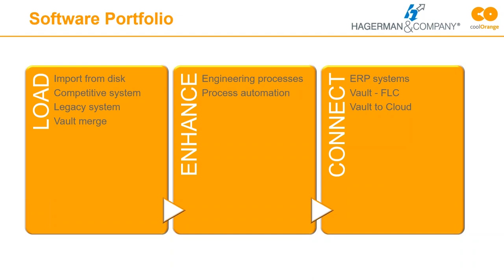There's no real easy way to merge Vaults while keeping all the history of files in both systems. Autodesk provides a tool to enable that, but it's only available to resellers and is not easy to use. Cool Orange has products to help enable that utility and make the process smoother. The second bucket of products focuses on enhancing Vault workflows — automating and enhancing processes — and introducing things like validation, which we'll get into next week.